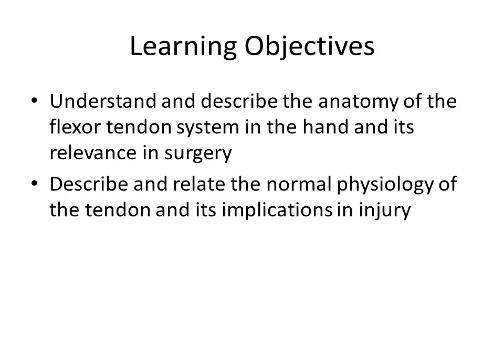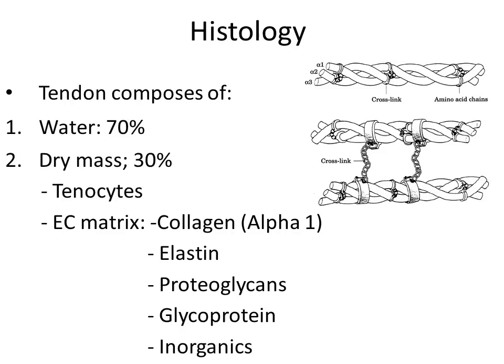The tendon is composed mainly of water, as is most of the human body, and consists of 30% dry mass, which mainly consists of a small amount of cellular matter known as the tenocytes, which secrete the collagen matrix — the extracellular component. It consists of elastin, proteoglycans, glycoproteins, and inorganic material.